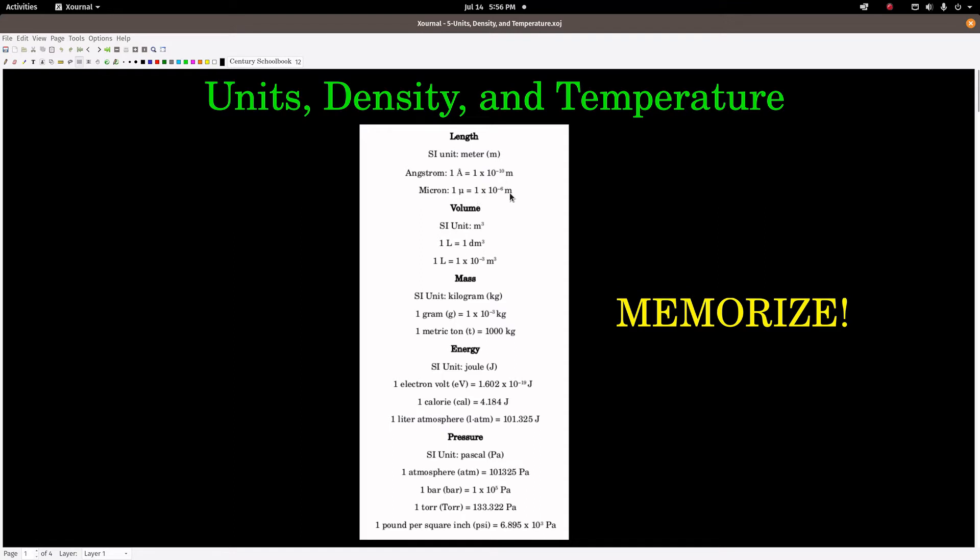The SI unit of volume is the meter cubed. We also use liters quite a bit, which is 1 decimeter cubed, or 1 times 10 to the minus 3 meters cubed. The SI unit of mass is the kilogram, kg, both lowercase. By the way, case is important in all these. A metric ton, which we don't see that much in chemistry, is 1,000 kilograms.